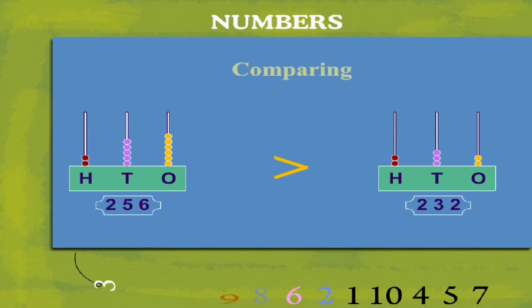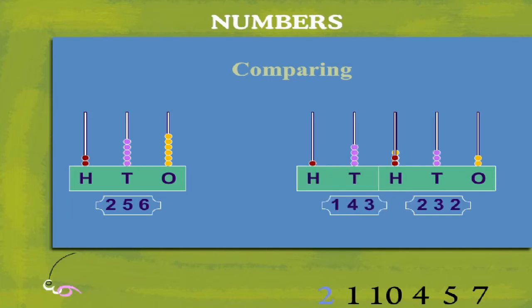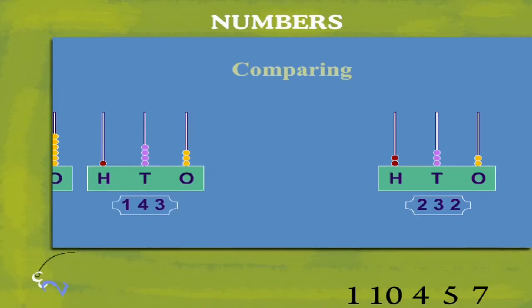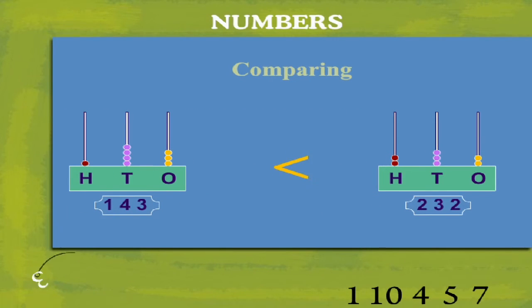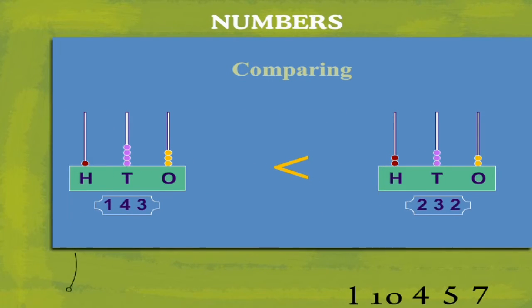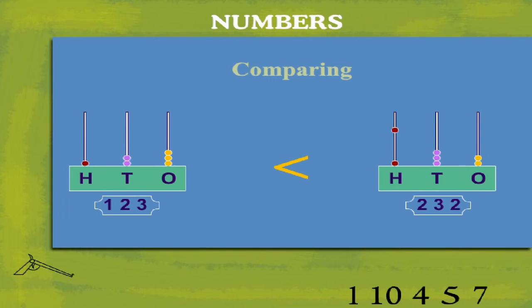Let's compare the numbers. Two hundred and fifty six is greater than two hundred and thirty two, and one hundred and forty three is less than two hundred and thirty two. Let's change these numbers.